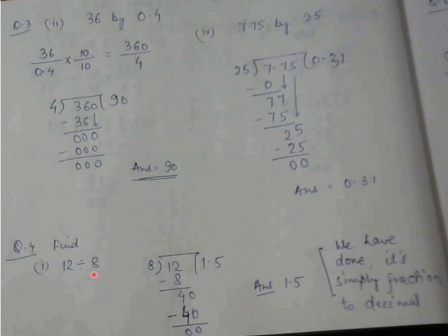Question number 4 is find 12 divided by 8. 12 divided by 8 can be written in fraction as 12 by 8. Remember we have studied how to change fractions to decimals. So same thing I am doing here. 12 divided by 8 will give you 1.5. We have done this kind of questions earlier also.